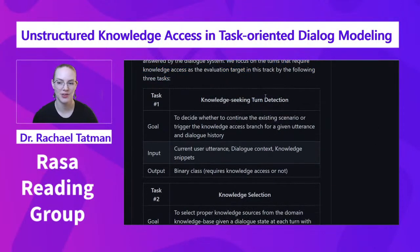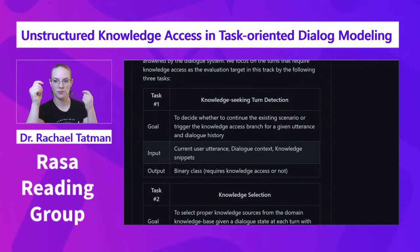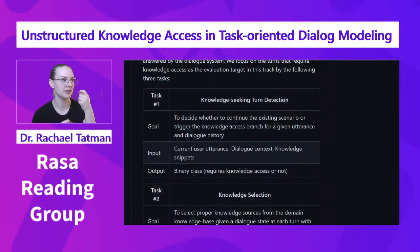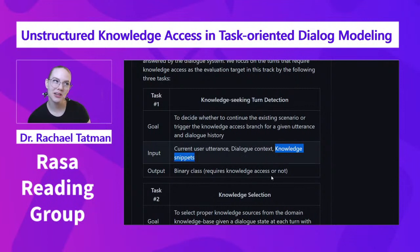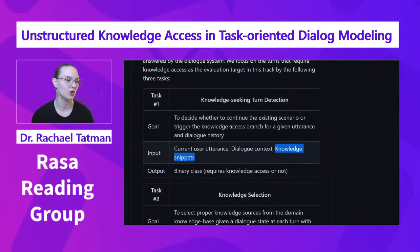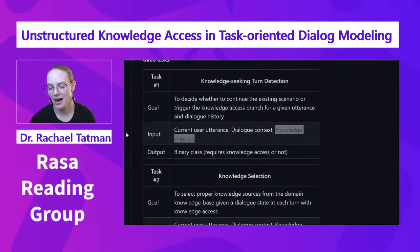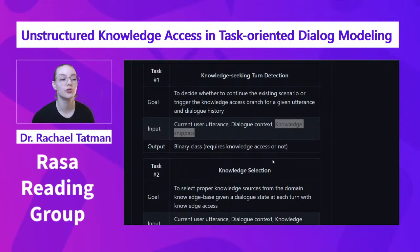Task one is to decide whether to continue the existing scenario or trigger the knowledge access branch. You have sort of two subsystems: one handles regular dialogue, and the other gets information from an information source for a given utterance and dialogue history. The input is the current user utterance, dialogue context, and knowledge snippets. The output is a binary class — requires knowledge access or not — so should you trigger your secondary system?